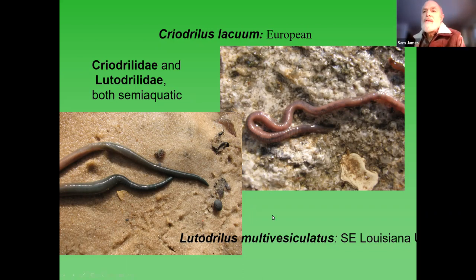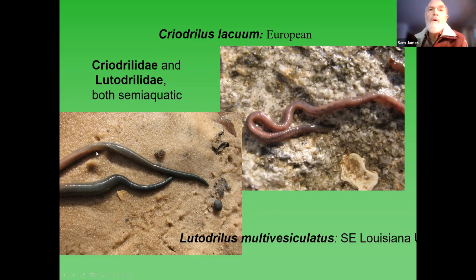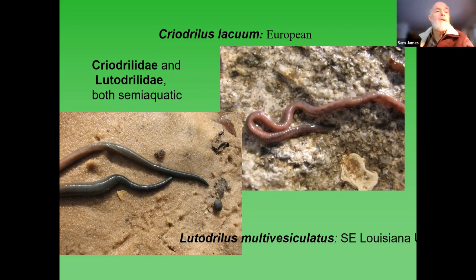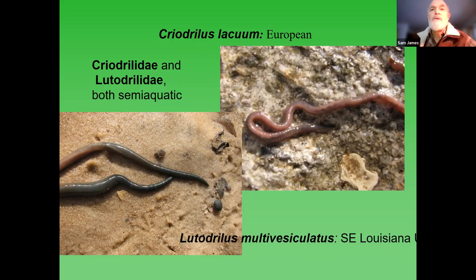Lutodrilidae multivesiculatus is a remarkable earthworm - a dark gray-greenish color, also semi-aquatic, with a squarish feature at the corners visible on this specimen. Lutrodus only lives in fine-textured mud near rivers in the extreme southeastern bit of the state of Louisiana near the Gulf Coast, along the Pearl River drainage. We've looked in various places nearby and haven't found it yet, though there's a rumor it might occur farther west in Louisiana in the deltas of the Mississippi. It is about 30 to 40 centimeters long at adulthood and rather speedy, so it takes a little work to collect.